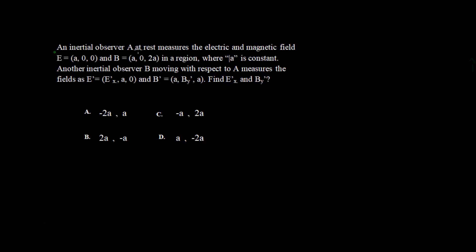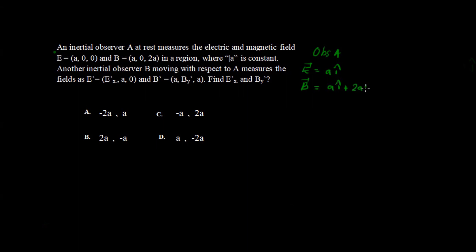Now let's look at another similar question. An inertial observer A at rest measures the electric field E to be a·i and the magnetic field B to be a·i plus 2a·k-cap, where a is a constant. Another observer B is moving with respect to A.